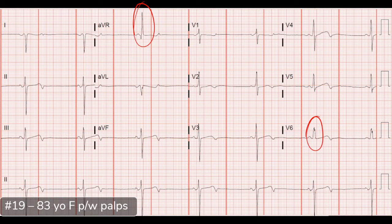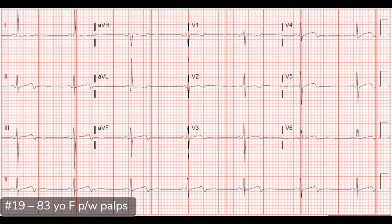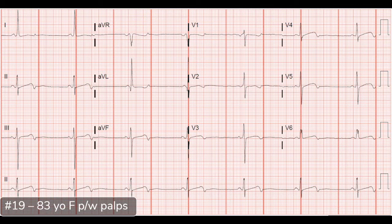After fixing the limb leads, the ECG showed a normal axis — still sinus bradycardia, still needing to be addressed. Sinus bradycardia, tachybrady syndrome, inappropriate chronotropic response, and sinus arrest all fall under the grab-bag term sinus node dysfunction, and that patient needs a pacemaker. We admitted her for evaluation by cardiology and electrophysiology with plans for pacemaker placement.